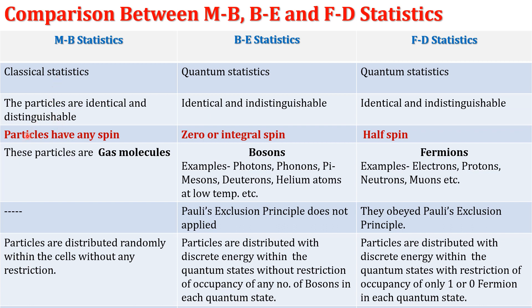In Maxwell-Boltzmann statistic, the particles are identical and distinguishable, and those particles can have any spin. While in Bose-Einstein statistic, these particles have 0 or integral spin — integral means it may be 1, 2, 3, 4 and so on. In Fermi-Dirac statistic, the particles have half-integral spin.